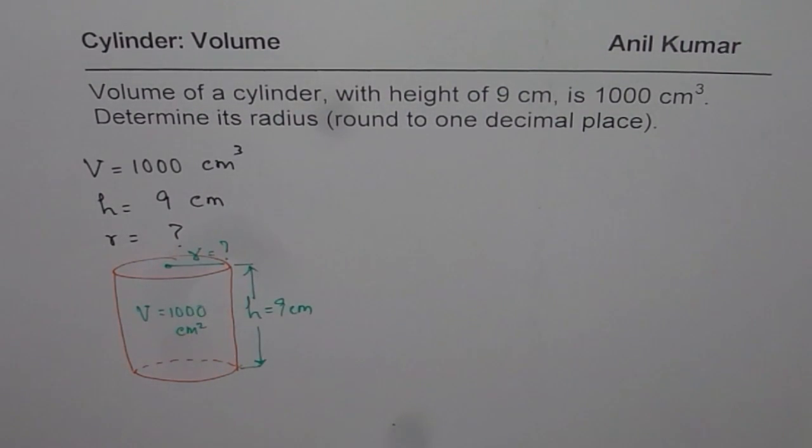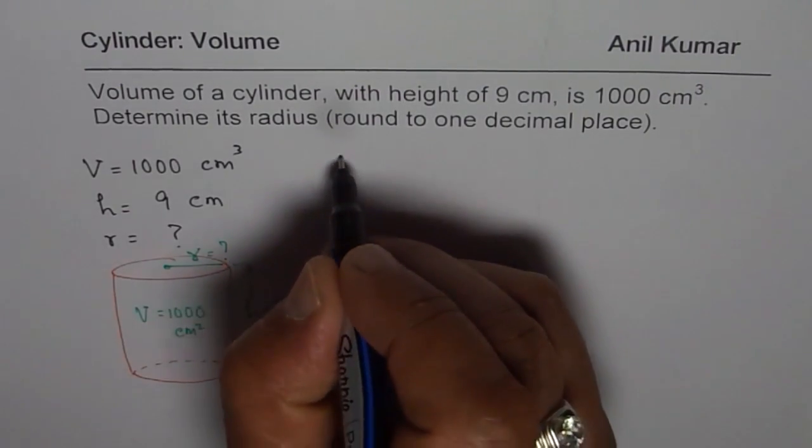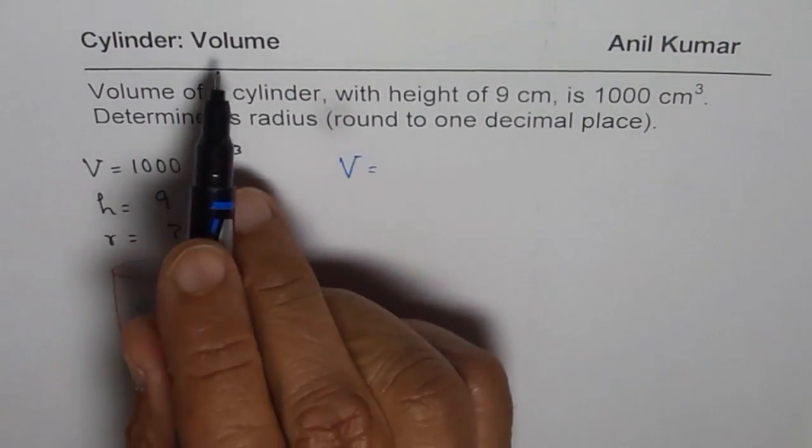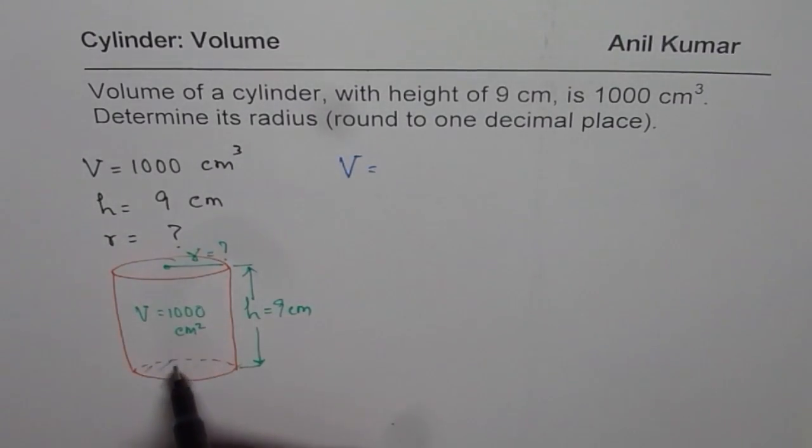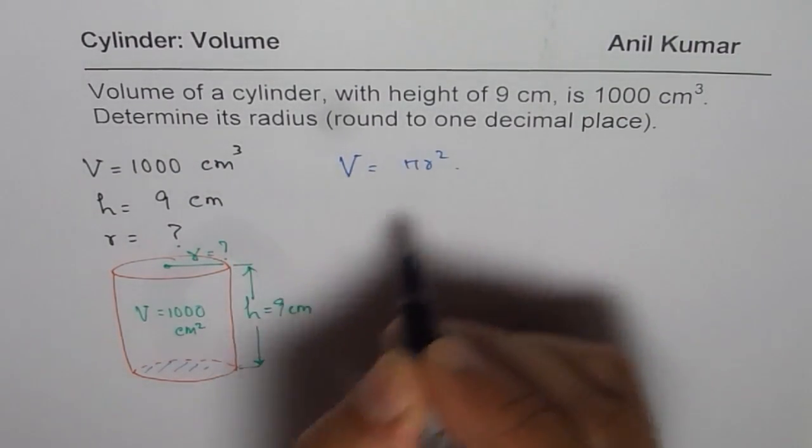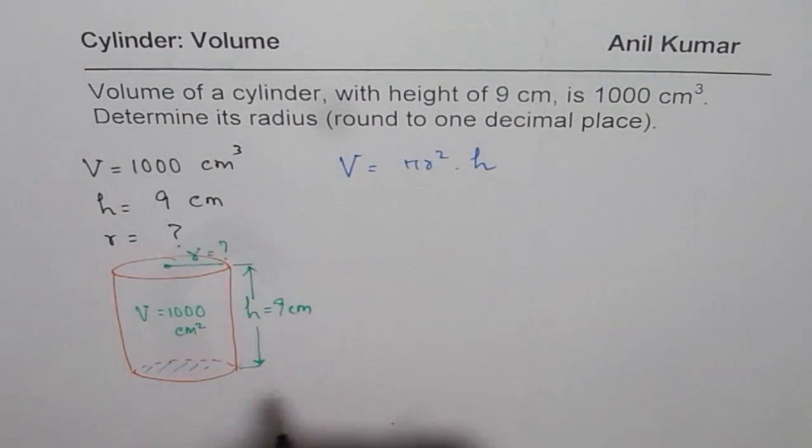How are you going to find it? Well, you can pause the video, solve the question then look into my solution. What is the formula for volume of a cylinder? Area of the base which is pi r square times height. That is the formula.